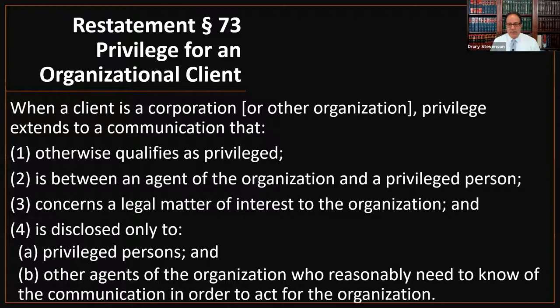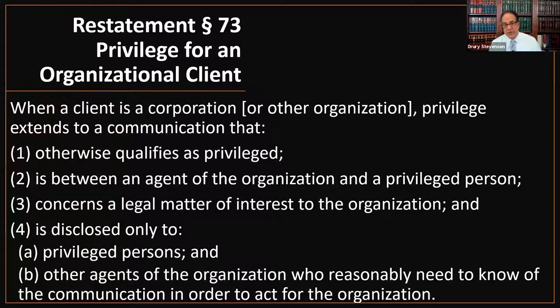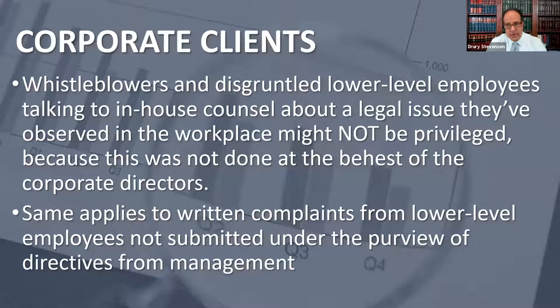The Restatement in Section 73 of the Restatement of the Law Governing Lawyers breaks this into four points. When a client is a corporation or other organization, privilege extends to a communication that: one, otherwise qualifies as privileged — meaning none of the privilege exceptions like crime or fraud apply; two, it's between an agent of the organization and a privileged person, the privileged person being the lawyer; and it concerns a legal matter of interest to the organization. This distills the Upjohn doctrine as it has evolved since the case.